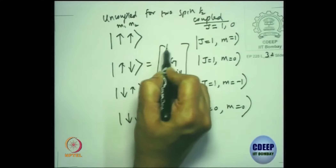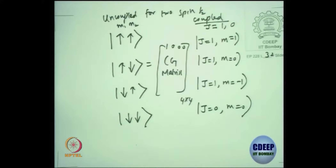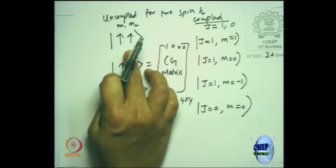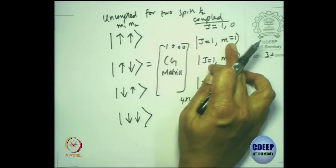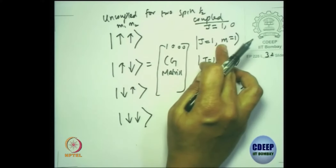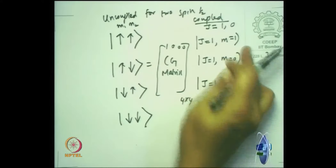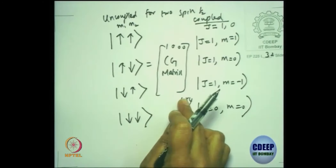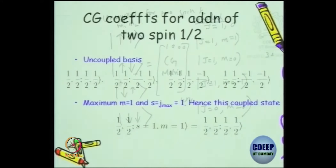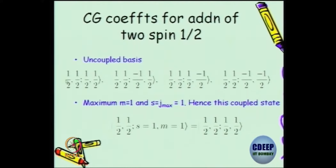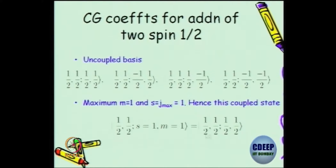The first element corresponds to the state j=1, M=1, which is a stretched state. For a stretched state, the CG coefficient is 1, provided M1 plus M2 equals M=1. All other coefficients in that row are 0. So the first row of the 4×4 CG matrix is 1, 0, 0, 0.